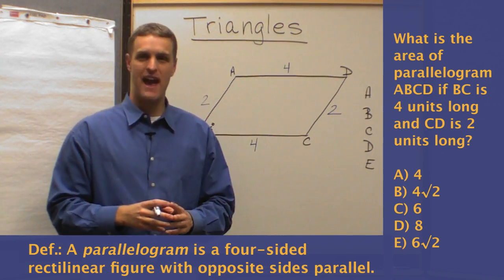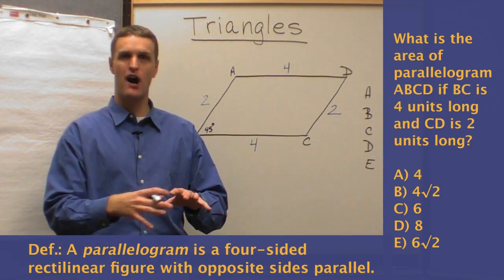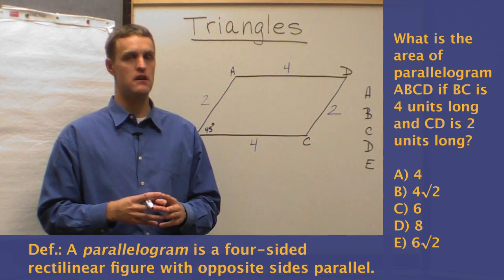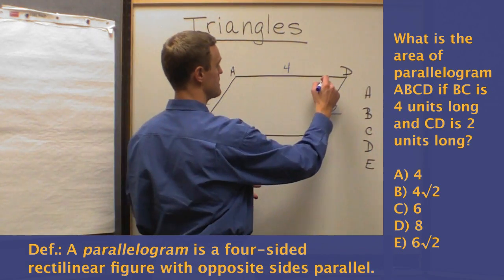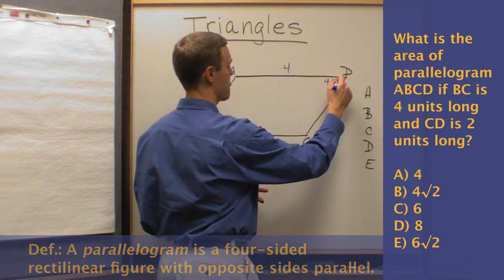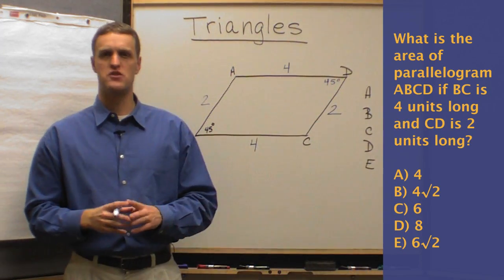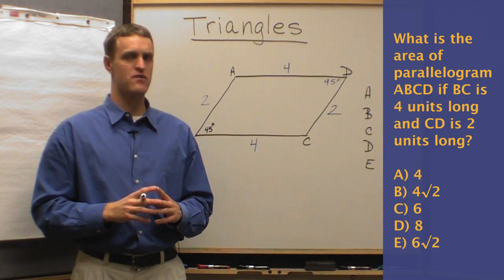And of course, the angles opposite each other within the parallelogram would be congruent or equal. So if that's 45 degrees, that's 45 degrees, right? All right. So there we go. Just a few rules about parallelograms for you.